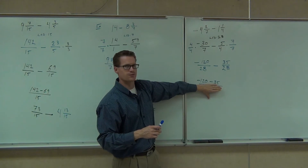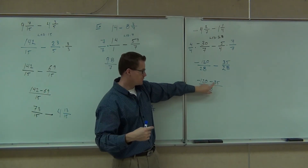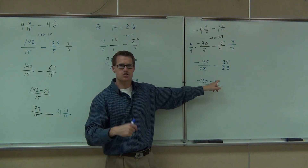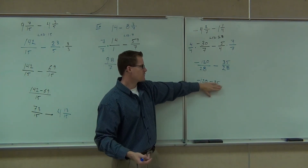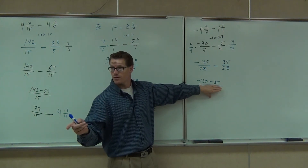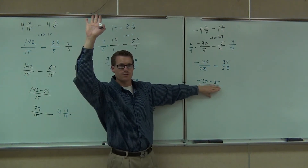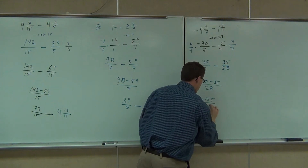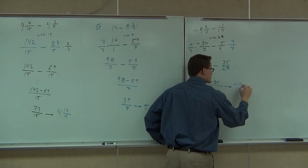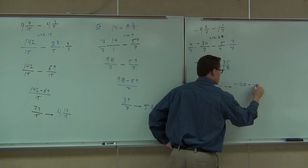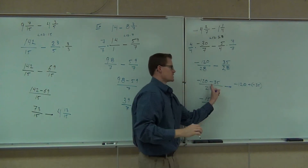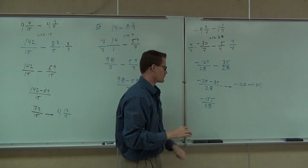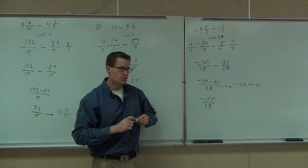You need to be able to do negative 120 minus 35. You have two choices: leave that as subtraction — moving left on the number line — or change it to plus and negative. You can still do negative 120 plus negative 35. The addition rule says same sign, add the numbers, keep the common sign — you get negative 155 over 28.